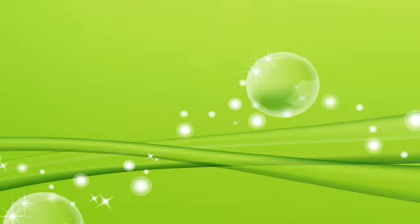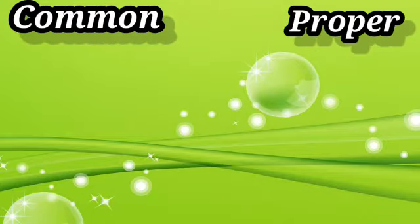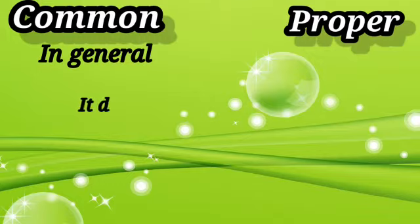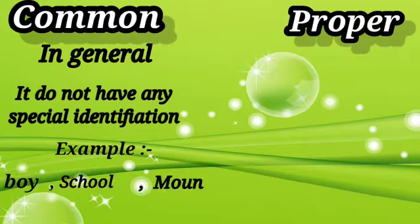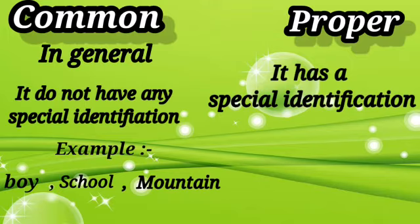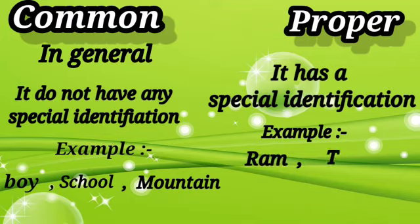Now let's come to common noun and proper noun. Common noun means in general — it does not have any special identification. Examples: boy, school and mountain. Proper noun is the opposite of common noun — it has a special identification. Examples: Ram, Tina, India and Greenland.